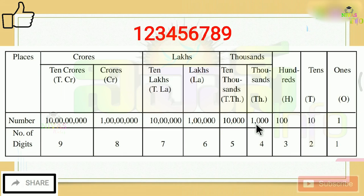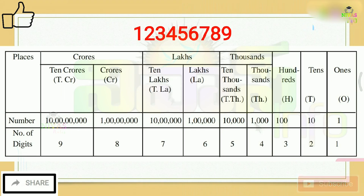The first comma represents the thousands place. To the right of the first comma is the hundreds place — 100s. It is easy to use commas this way.